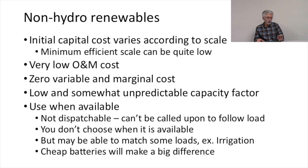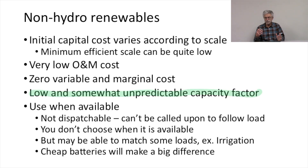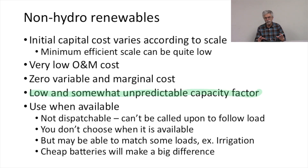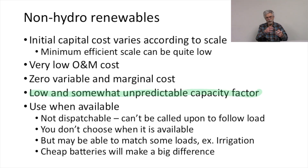Another important characteristic of non-hydro renewables is that they have a low and somewhat unpredictable capacity factor. Solar plants have something on the order of a 25% capacity factor on average, but that can be higher or lower depending on the time of year and whether it's cloudy, rainy, or sunny. The capacity factor is something we can't predict with certainty over the short and medium term, though over the long run we have some sense of the average. That long-run average will depend on the geography of where the plant is installed, and the same is true of wind.